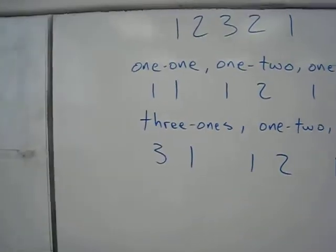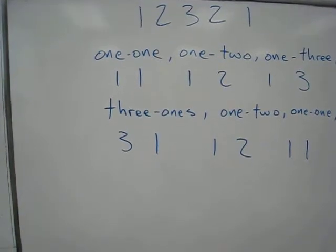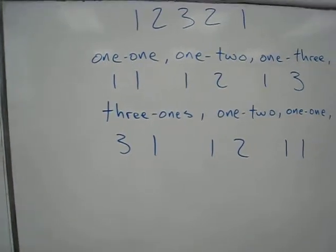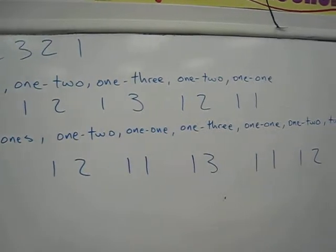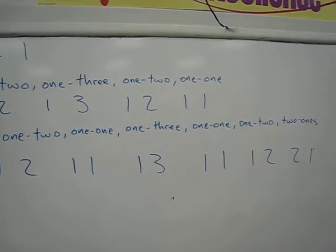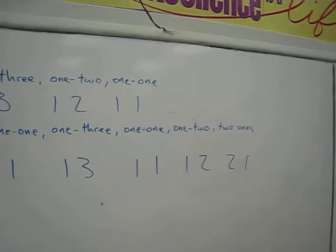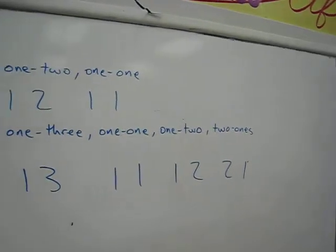Now back over here. Now we're going to describe it with words again, the line above it. So there's three-ones, one-two, one-one, one-three, one-one, one-two, and two-ones.